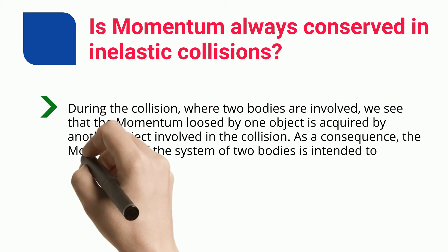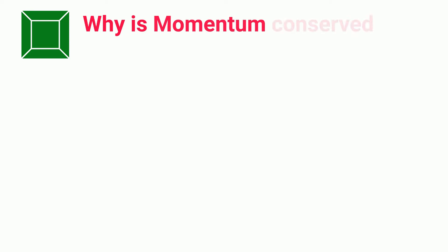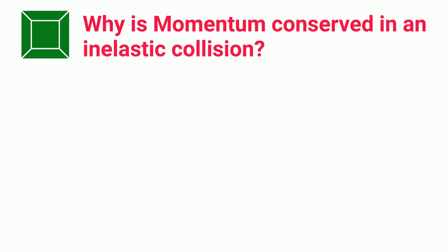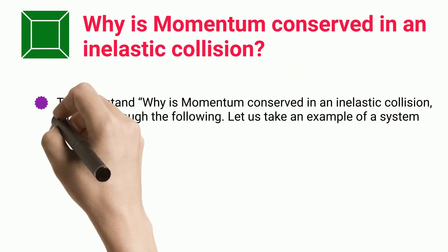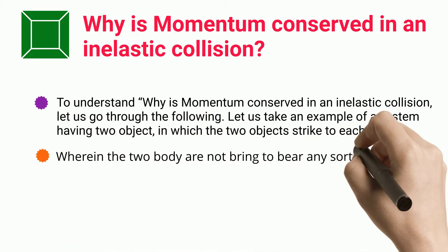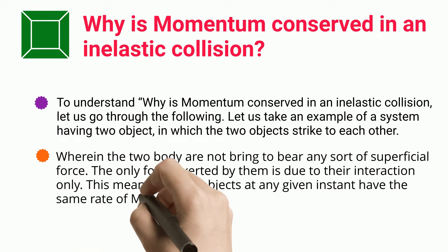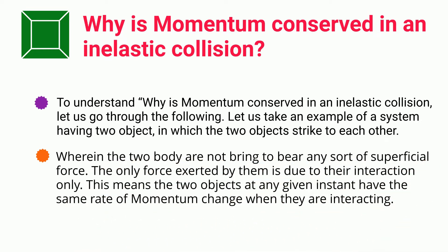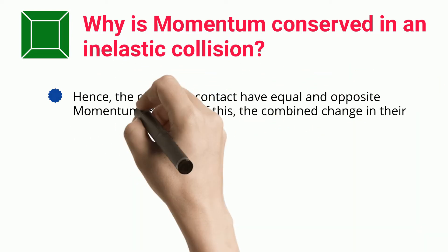As a consequence, the momentum of the system of two bodies is intended to conserve. To understand why momentum is conserved in an inelastic collision, consider a system having two objects which strike each other, where the two bodies do not exert any external force. The only force exerted is due to their interaction. This means the two objects at any given instant have the same rate of momentum change when they are interacting.